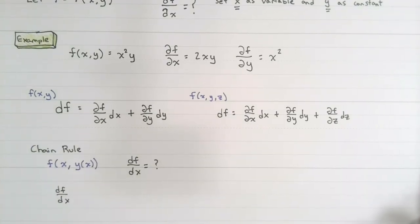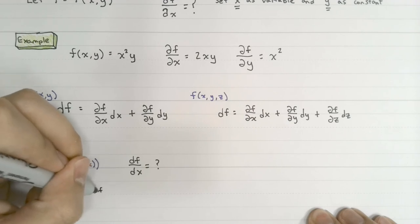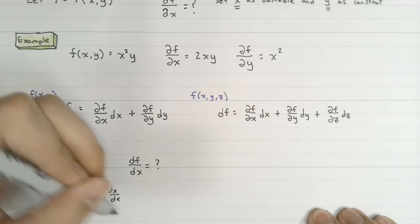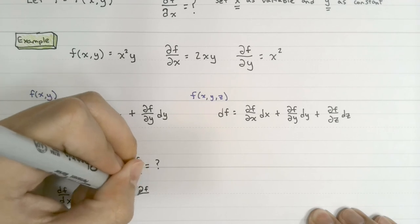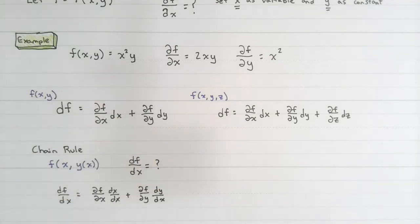Well we can find this by using the chain rule. The chain rule tells us that df over dx will be equal to the change in f with respect to x, but in this case we're looking at a partial change, times dx over dx, plus the change in f with respect to y, and once again we're looking at a partial change, times dy over dx.